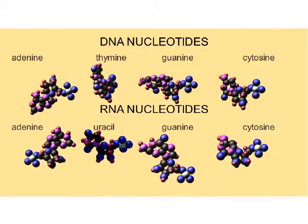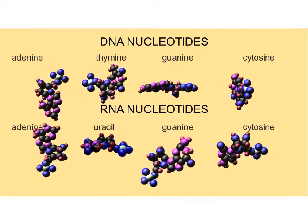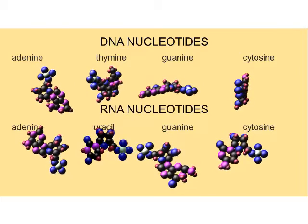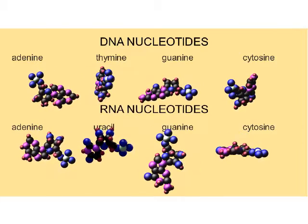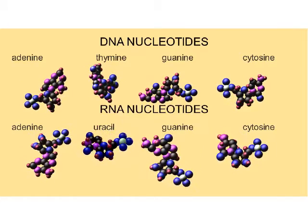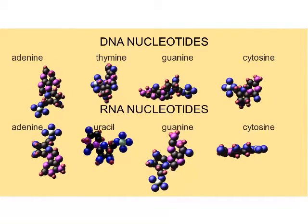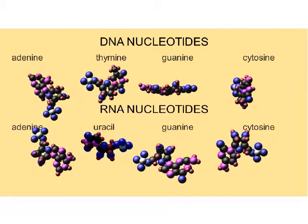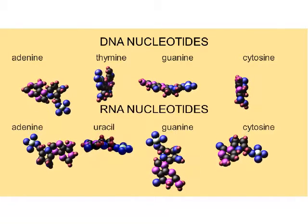All of the nucleotides found in DNA and RNA can be synthesized in the absence of life. Adenine is not only the most common nucleotide in living organisms, it is also the most easily formed in abiotic conditions.